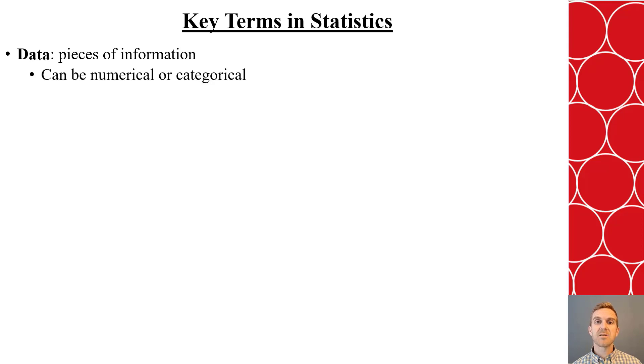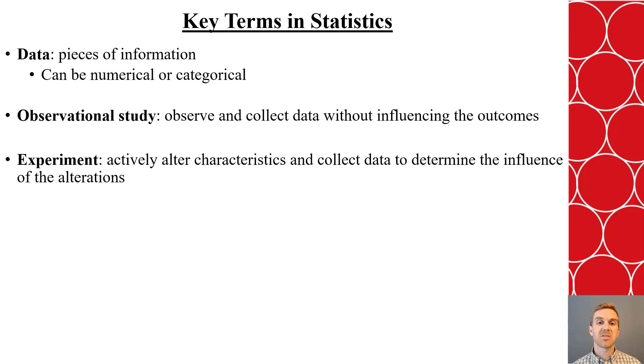Now, data is pieces of information that we collect. It can be both numerical and categorical, depending on the questions we ask. We can do different types of studies to collect such data. We can do an observational study, where we observe and collect the data without influencing the outcomes whatsoever, kind of like watching a class as a teacher teaches. Or we could do an experiment, where we're actively altering characteristics and collecting data to determine the influence of that alteration, kind of like changing the teacher one week to the next and seeing what happens with the class.